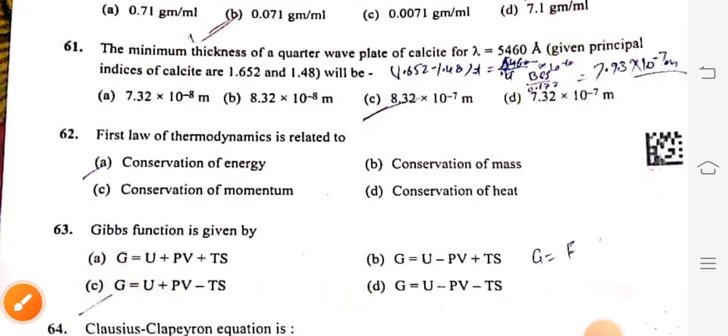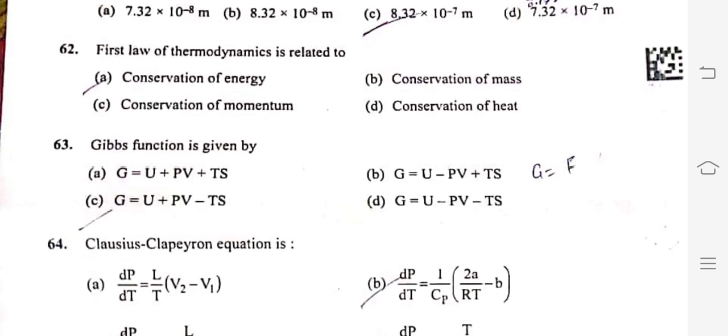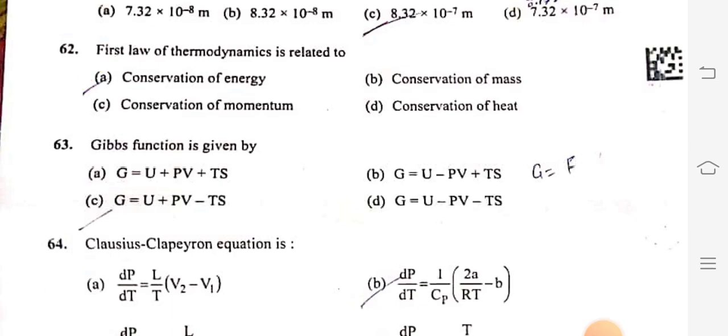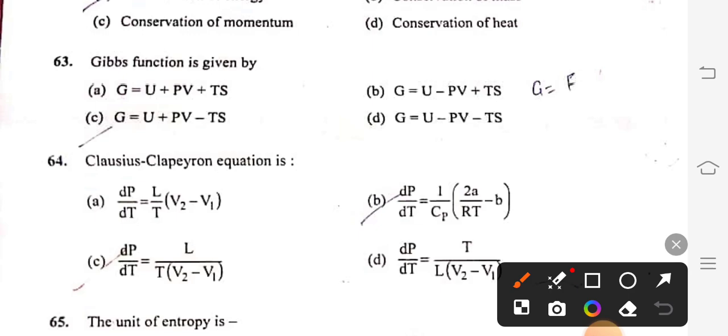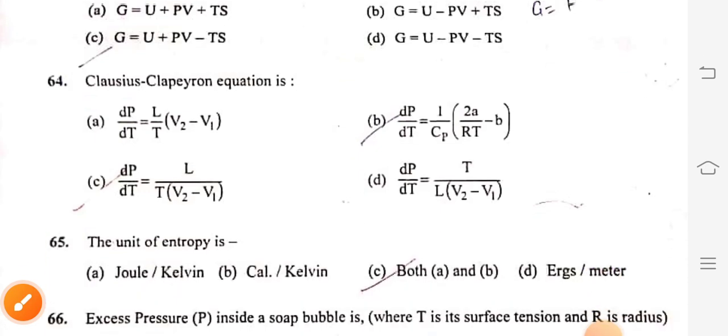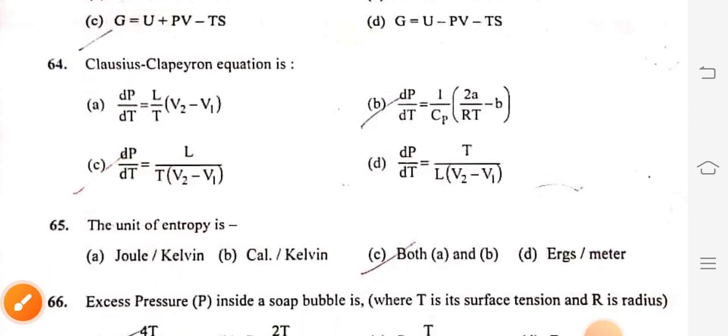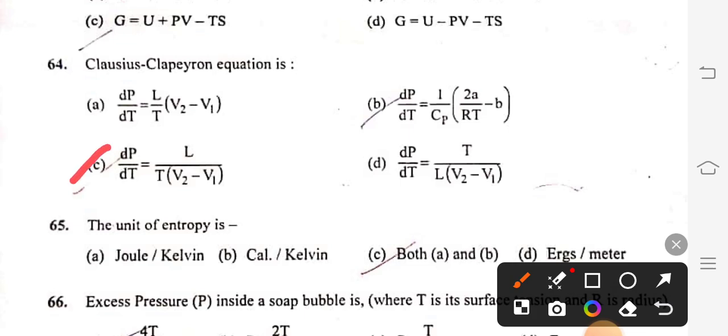Question 62: First law of thermodynamics is related to conservation of energy, option A. Question 63: Gibbs function is given by G equals U plus PV minus TS, option C. Question 64: Clausius-Clapeyron equation is DP by DT equals L upon T times V2 minus V1, option C.